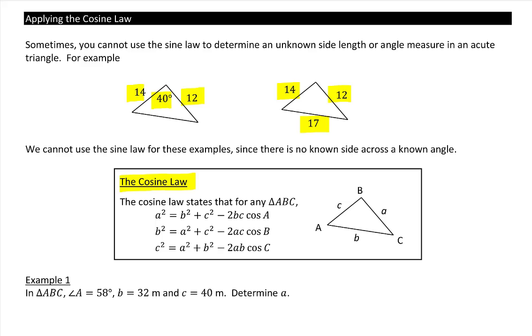The cosine law states that for any triangle ABC that a² = b² + c² - 2bc cos A. Or b² = a² + c² - 2ac cos B. Or again, c² = a² + b² - 2ab cos C. We can see this is just a modified Pythagorean theorem, and this works for non-right triangles. So let's go through a few examples on how to use the cosine law.